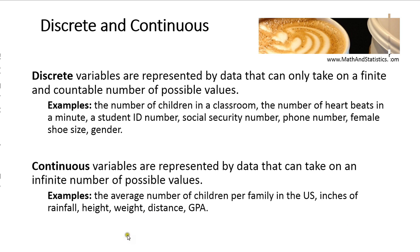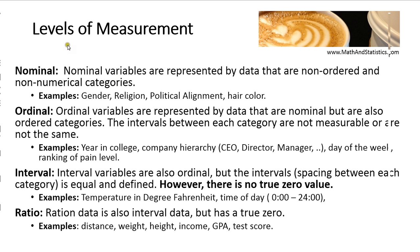Inches of rainfall, height, weight, distance, and GPA are all continuous variables because there is an infinite number of possible values they can take on. GPA is always rounded to two significant digits, but it is in fact continuous. Next are the four levels of measurement: nominal, ordinal, interval, and ratio. Each one builds on the one before it.